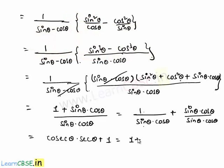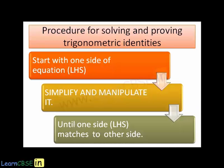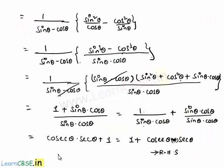Here 1 by sine theta into cos theta can be written as 1 by sine theta into 1 by cos theta, which is cosecant theta into secant theta, plus 1. So which is finally equal to 1 plus cosecant theta into secant theta, which is our required right hand side. Therefore LHS is equal to RHS and the given equation is hence proved.